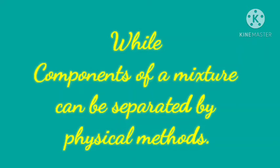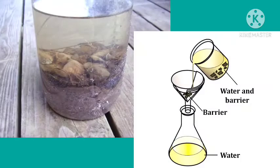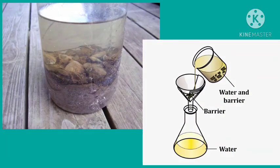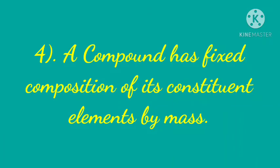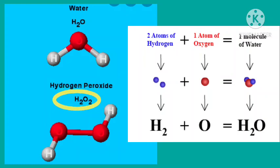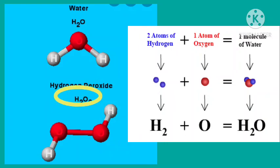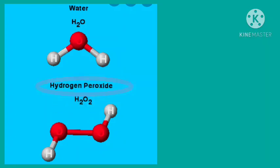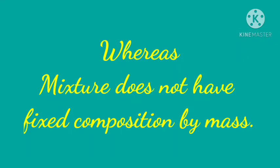For example, you can separate pebbles from water by filtration. Next, a compound has a fixed composition of its constituent elements. For example, in a single molecule of water there are two hydrogen atoms and one oxygen atom. If you add one more oxygen atom, it is no longer a water molecule — it becomes hydrogen peroxide. Whereas a mixture does not have a fixed composition by mass.